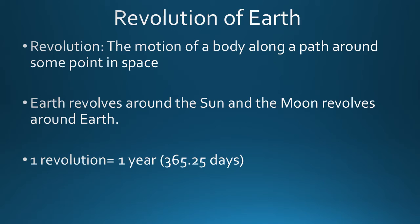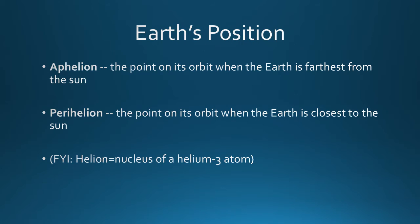Revolution is the motion of a body along a path around some point in space. Earth revolves around the Sun, and the moon revolves around the Earth. The time it takes Earth to revolve around the Sun is approximately 365.25 days. The reason we have a leap year is that the extra 0.25 adds up — 0.25 times four equals one full extra day every four years.